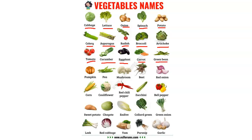Green bean. Green bean. Pumpkin. Pumpkin. Pea. Pea. Mushroom. Mushroom. Beet. Beet. Red onion. Red onion. Corn. Corn. Cauliflower. Cauliflower. Red chili pepper. Red chili pepper.